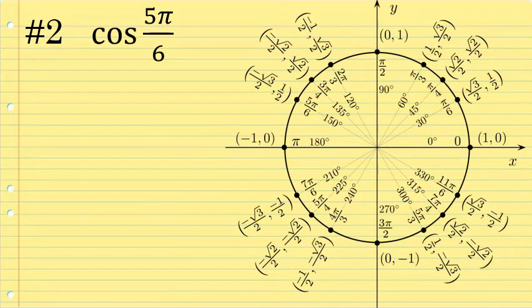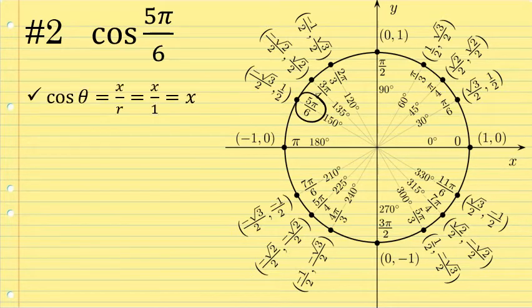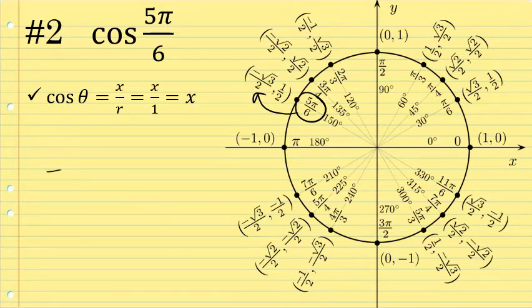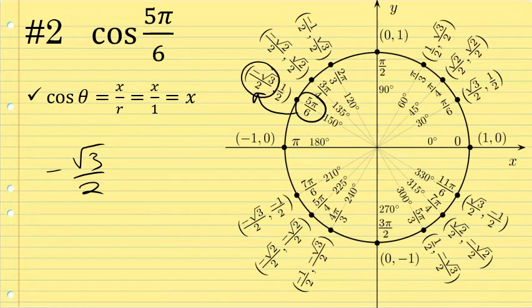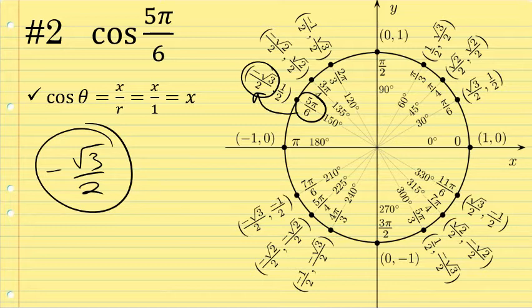Let's try the cosine of 5π/6. This is a radian angle in the second quadrant. The cosine ratio is x over r; on the unit circle since r is one, that's just the associated x-coordinate. The x-coordinate associated with the angle 5π/6 radians is negative square root of three over two. So the cosine of 5π/6 is negative √3/2.